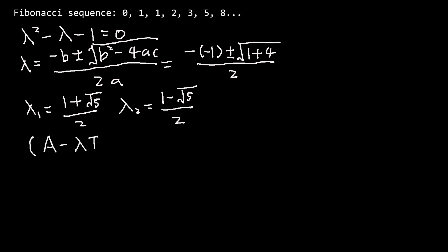The eigenvectors are in the null space of A minus lambda I. From the second row, we know x is [lambda, 1]. So x_1 is [lambda_1, 1] and x_2 is [lambda_2, 1].